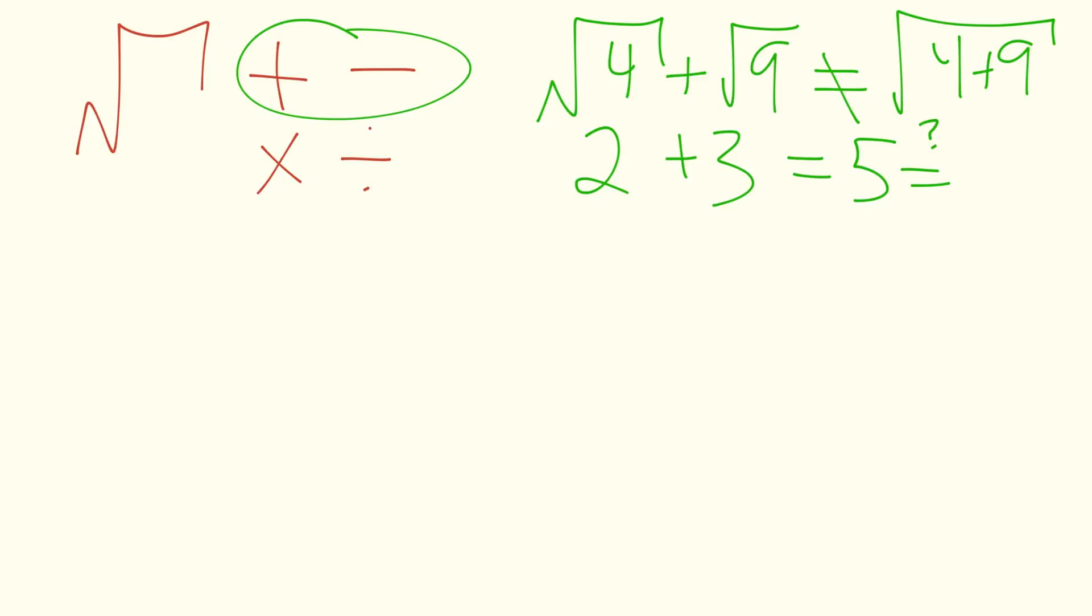is it equal to the square root of 4 plus 9? 4 plus 9 gives us 13. If you type the square root of 13 into your calculator, you're going to get a number approximately equal to 3.606. 5 is not equal to 3.606. So the square root of 4 plus the square root of 9 is not equal to the square root of 4 plus 9.